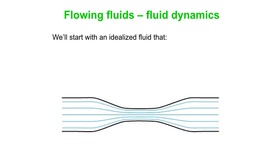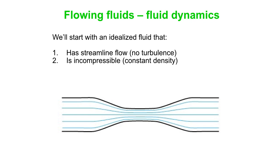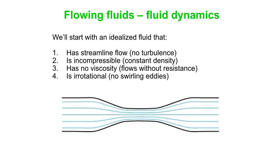So let's start with an idealized fluid. And we idealize it how? Well, we say it has streamlined flow. That means there's no turbulence. We say it is incompressible. That means it has a constant density and has no viscosity. It flows without any resistance at all. Finally, four, it's irrotational. So it's got no swirling eddies in the flow pattern.